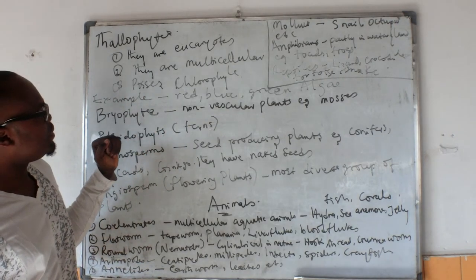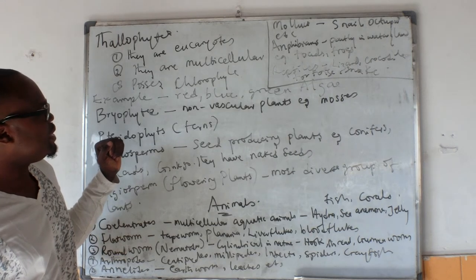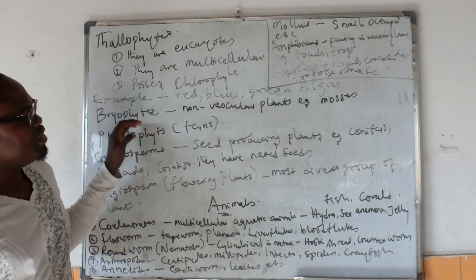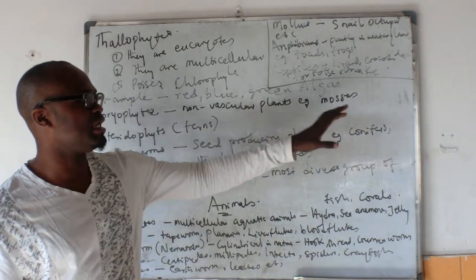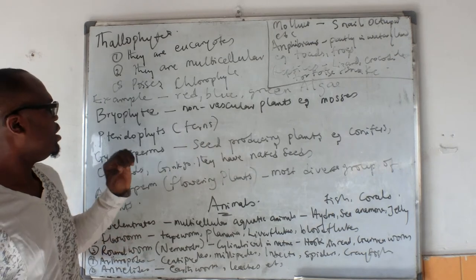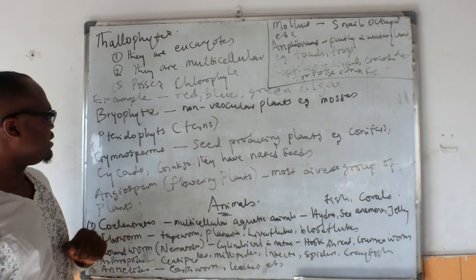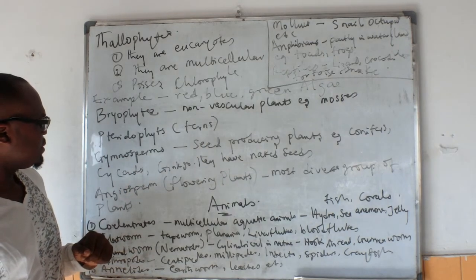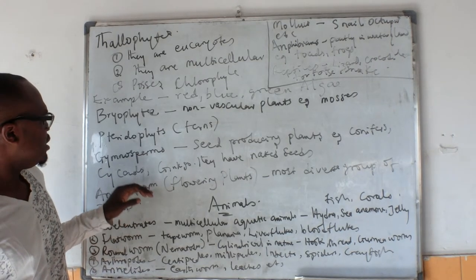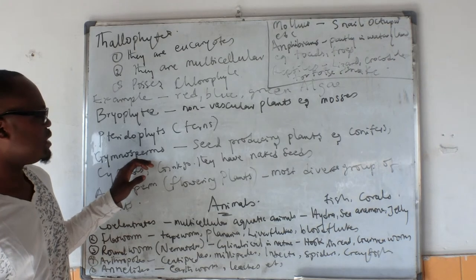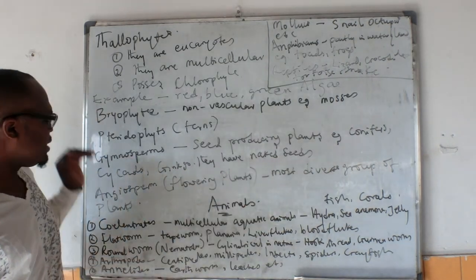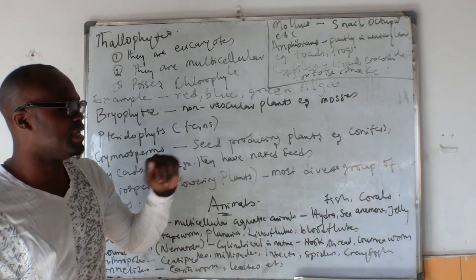Good examples are the red, blue, and green algae. We also have the bryophytes, which are non-vascular plants like the mosses. We also have the ferns, also known as pteridophytes. Then we have the gymnosperms and the angiosperms.